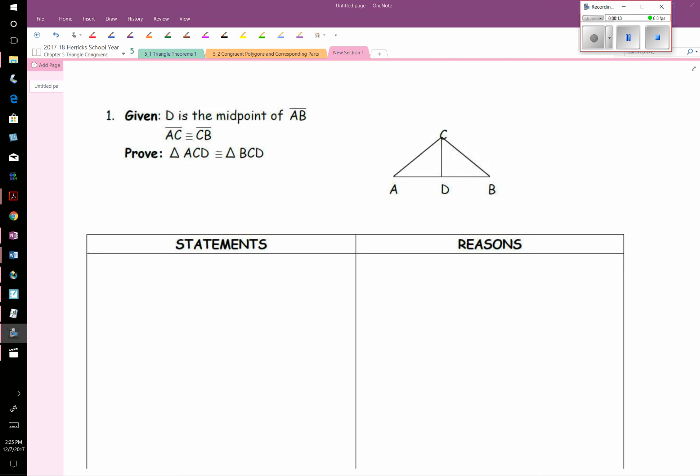Now looking at the givens, it tells me that D is the midpoint of AB. What that does is it splits a segment into two congruent parts. And I also know that AC is congruent to CB. Now we've got to figure out, is it side, side, side, or side, angle, side? Well, both triangles physically share CD. So I've got three pairs of sides that are congruent.